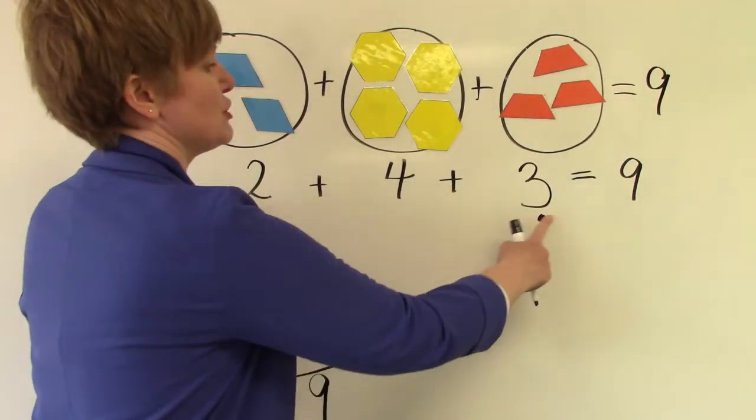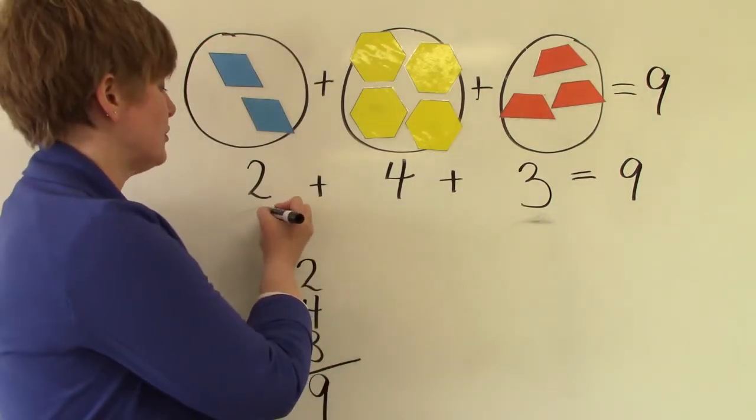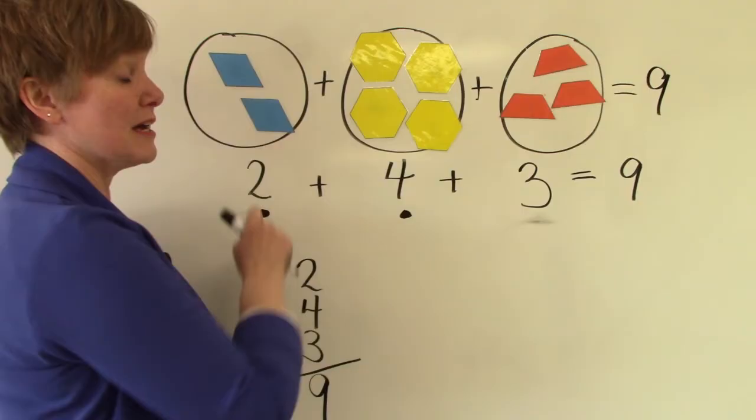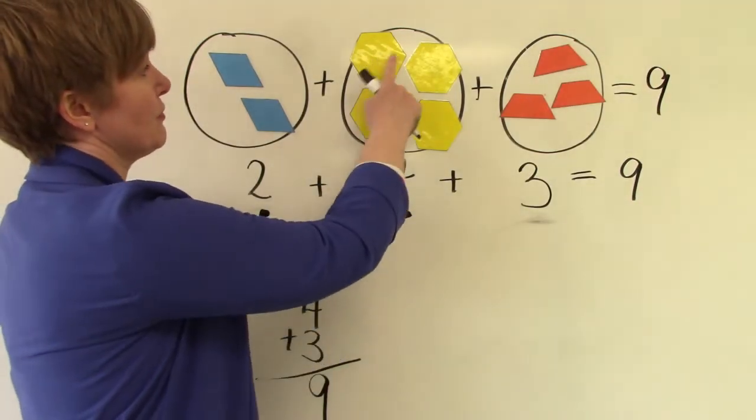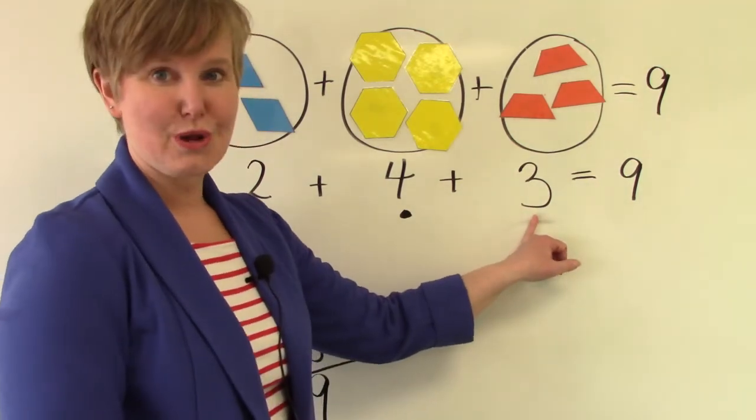Instead of our two and our three, let's just go in order and do the two and the four. I have two and I'm going to add on to that. Two, three, four, five, six. Six plus three.